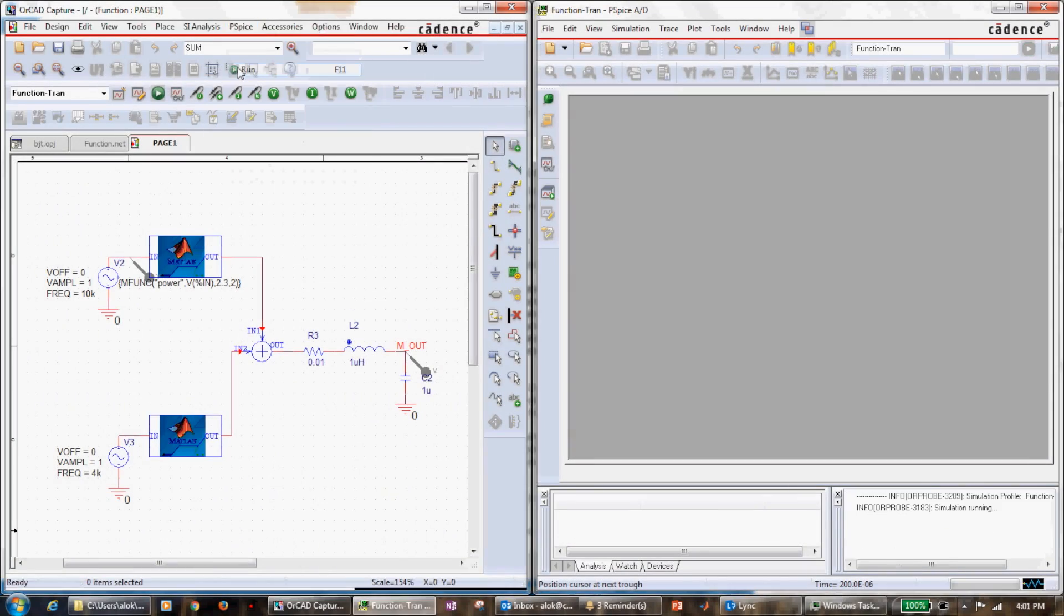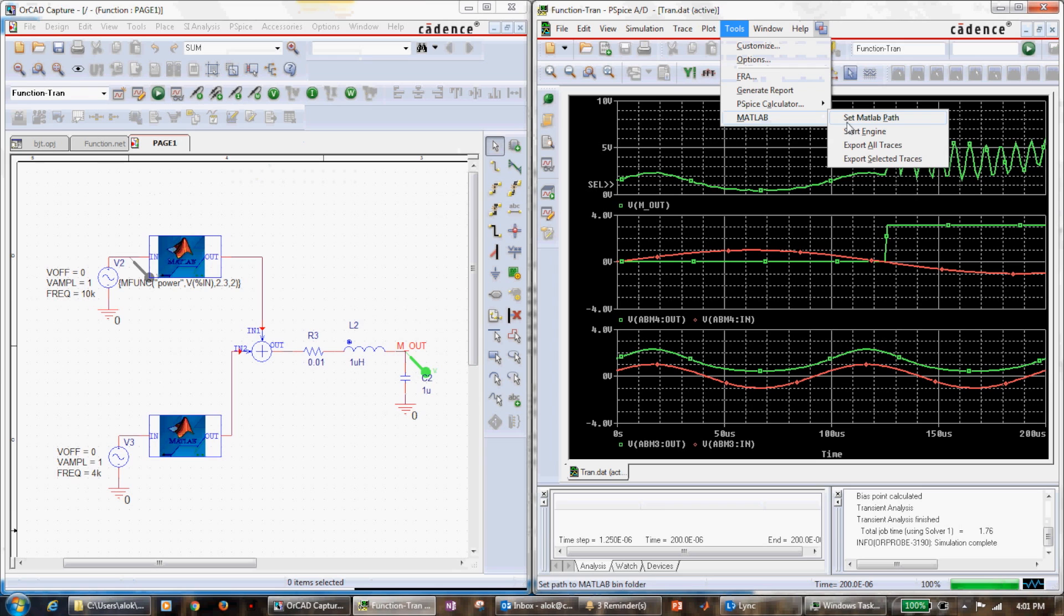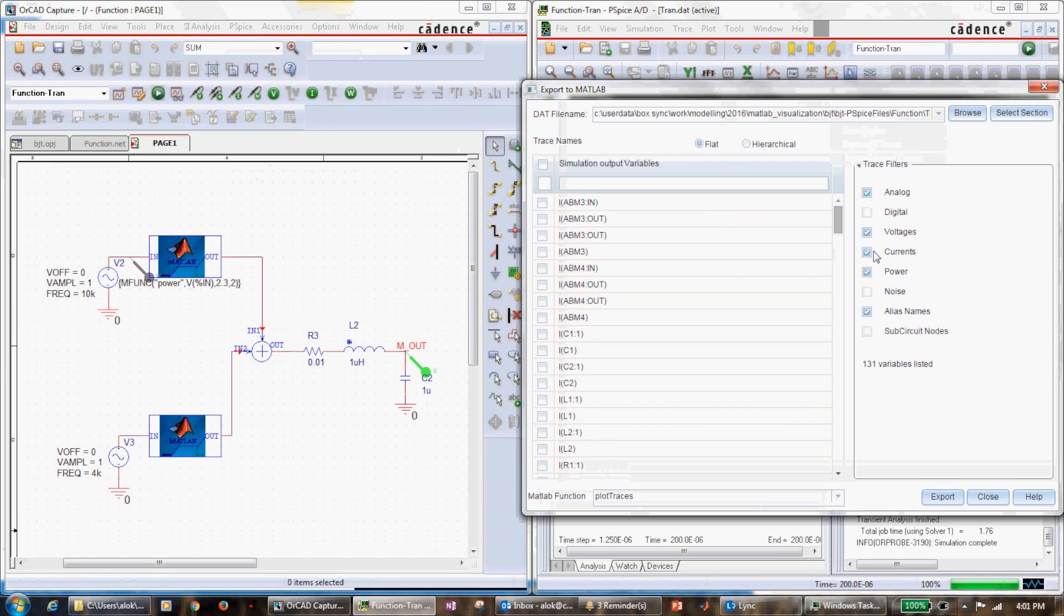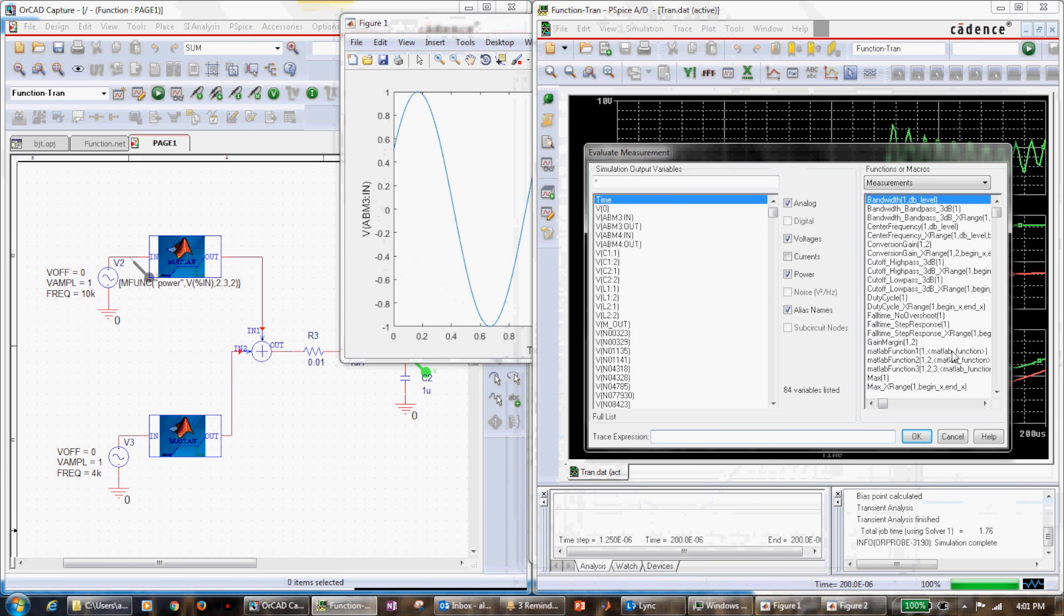This collaboration provides a seamless bi-directional interface between two industry-leading simulation tools: Cadence PSpice and MathWorks MATLAB. By adding a MATLAB Simulink model into the PSpice environment using code generation, or by adding a PSpice model into the Simulink environment for co-simulation.